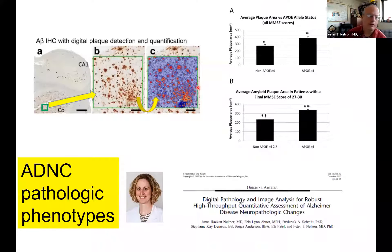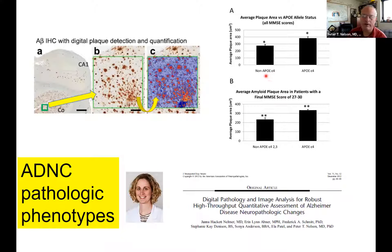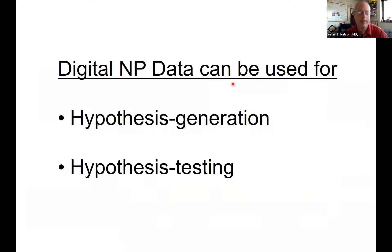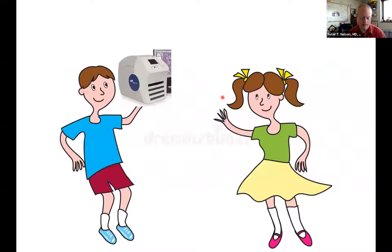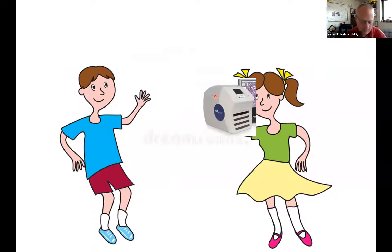This enables us to make various different observations. Here is an example of a photomicrograph of an A-beta stained hippocampus, analyzed for plaques. This is a fairly basic study showing the difference between plaque sizes for APOE positive versus APOE negative — they're bigger for the APOE positive ones. You can answer all sorts of questions and address them in many different ways. This tool is useful for both hypothesis generation and hypothesis testing.